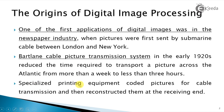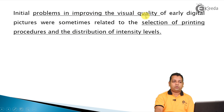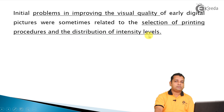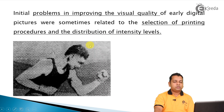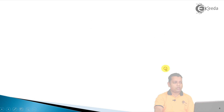Specialized printing improvements, coded pictures for cable transmission, and reconstructing them at the receiving end were key developments. The initial problems of improving visual quality of early digital pictures were related to the selection of printing procedures and the distribution of intensity levels. The first available image is a digital picture produced in 1921 from coded tape by a telegraph printer with special typefaces.